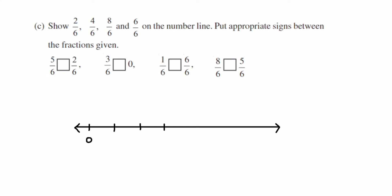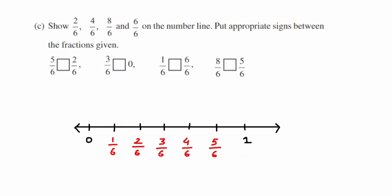Between zero and one we mark six equal parts: 1/6, 2/6, 3/6, 4/6, 5/6, and 6/6 — which equals one. Now we plot the given fractions: 2/6 is marked as point A, and 4/6 is marked as point B on the number line.